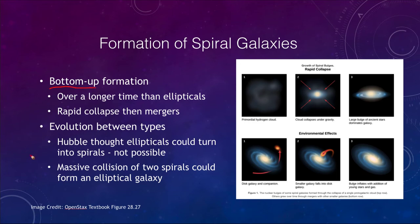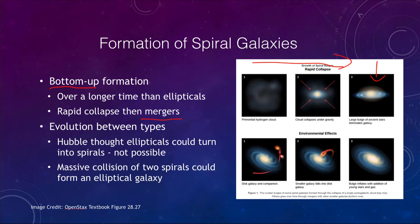Now let's look at spiral galaxies. We can look at bottom-up formation: they formed over a longer time period and then had a rapid collapse. Looking at steps one through three, we had a hydrogen cloud collapsing under gravity and forming a basic spiral galaxy. But then there were mergers - a small galaxy orbiting around, and over multiple orbits it eventually becomes engulfed, changing the size of the bulge of the galaxy.